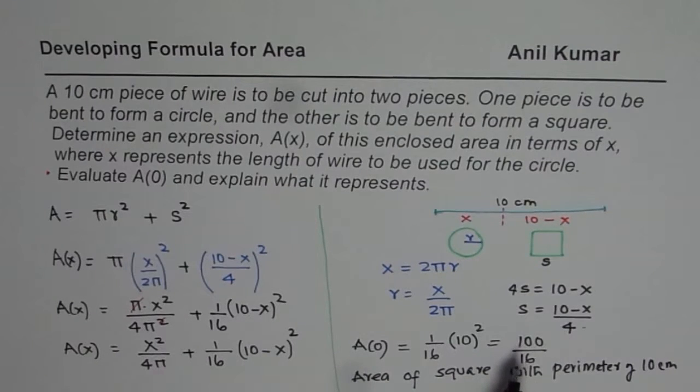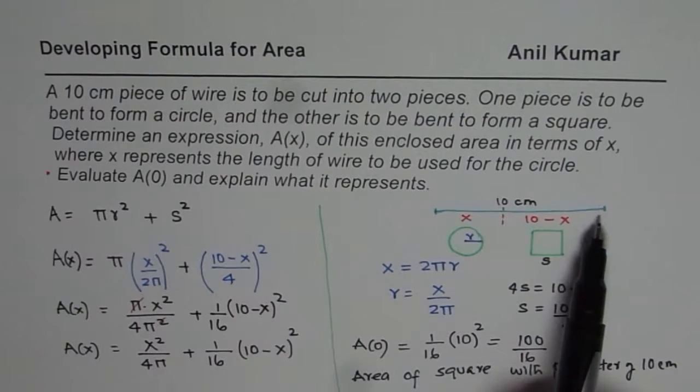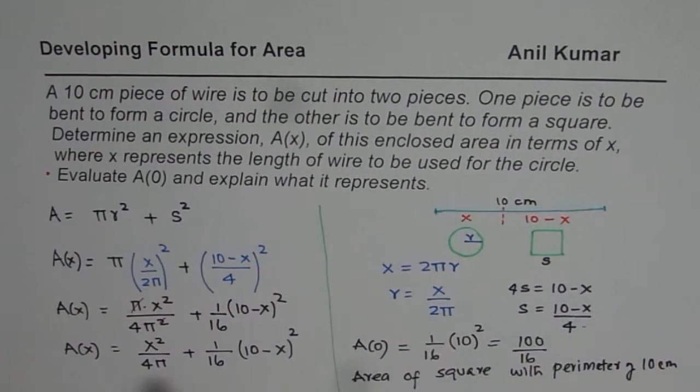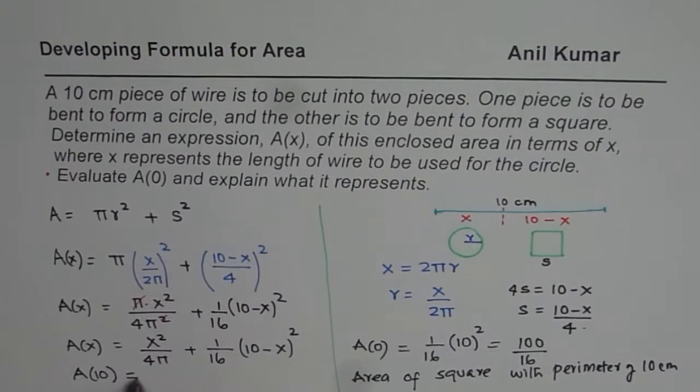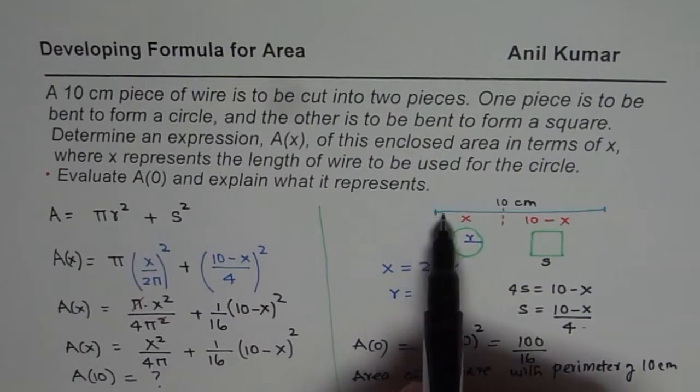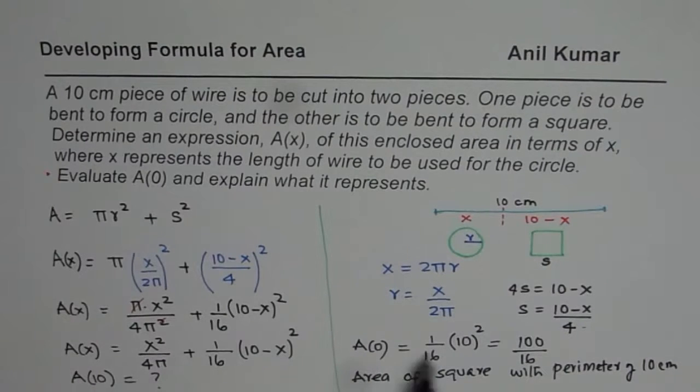But you need to understand that the x value could be from 0 to 10. So now as a question, what you can find is what is A(10) equals to, and what does it signify. That is to say, if I convert the whole length into circle, then what area do I get. Which one is the maximum area out of these, you can figure that out also from this kind of calculation.